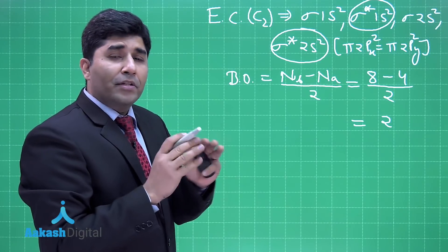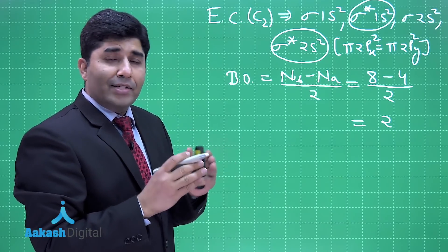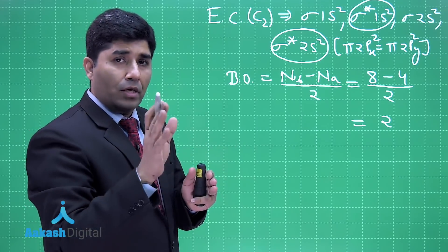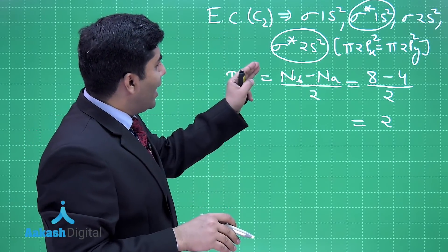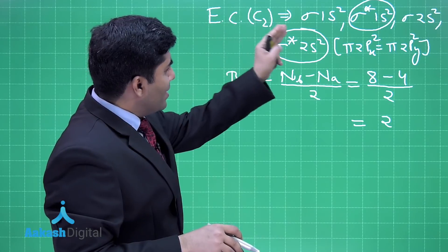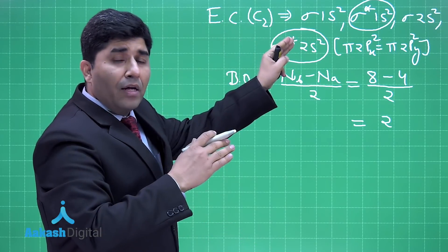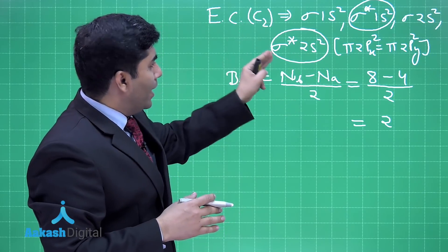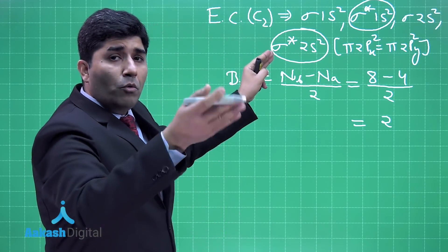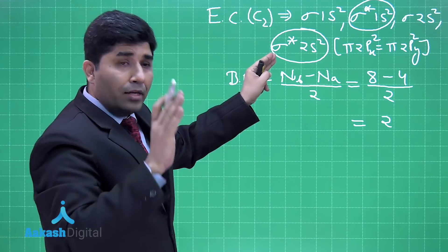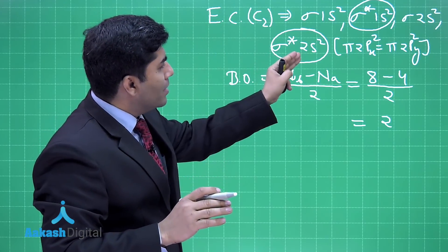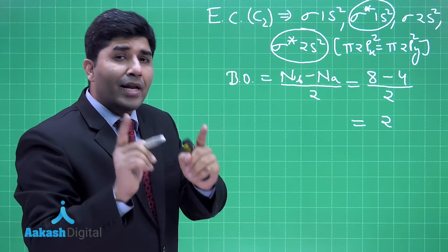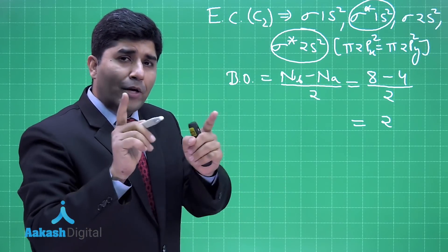Bonds are formed by valence electrons, which are the electrons with the highest energy. In this case, σ1s and σ*1s have less energy than σ2s and σ*2s. The outermost electrons we can take...